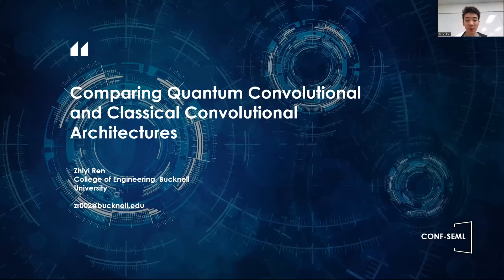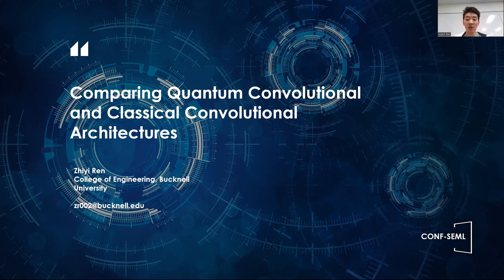Hi, my name is Ji Ren from Buckner University, and I'm currently a junior electrical engineer. Today I want to share my research about comparing quantum convolutional and classical convolutional architectures. In this research, I focus on comparative works analyzing the quantum convolutional neural networks, which we call QCNNs, and their traditional counterparts, convolutional neural networks, which we call CNNs. I hope to show some of the complexities, potential applications, and current challenges of these two distinct but also similar architectures. The exploration covers key concepts in quantum machine learning and deep learning, and I hope it offers a fresh perspective on these cutting-edge technologies.